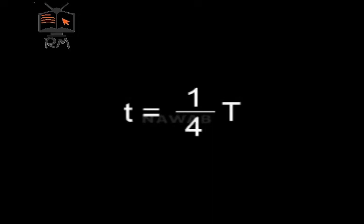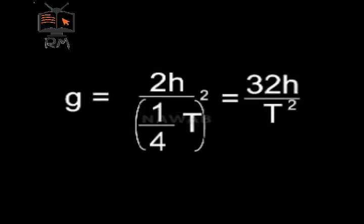So putting the value of t in the equation, we get g equals 2 h over 1 over 4 T whole square, which gives g equals 32 h over T square.